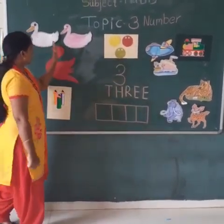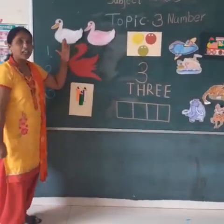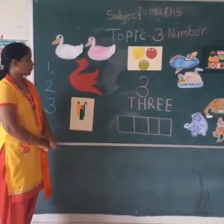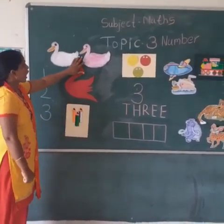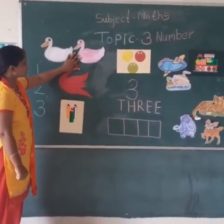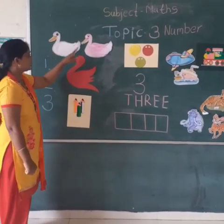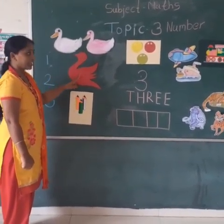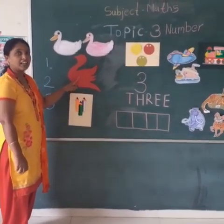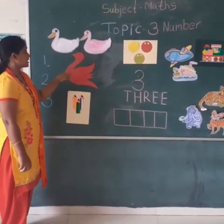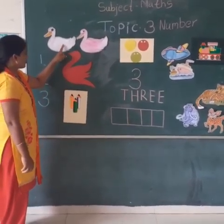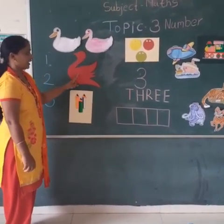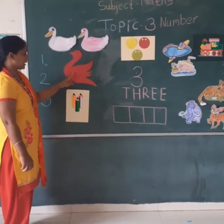Then next, we have different things for counting. So how many ducks? 1, 2, 3 ducks. The ducks are: 1 white, 1 pink, then red. So 3 ducks.